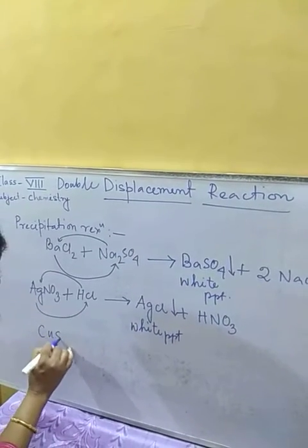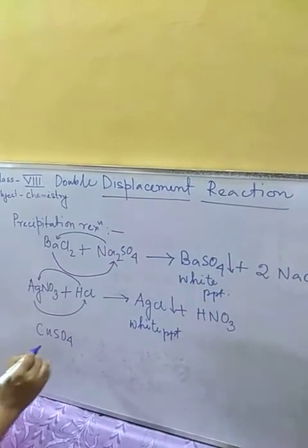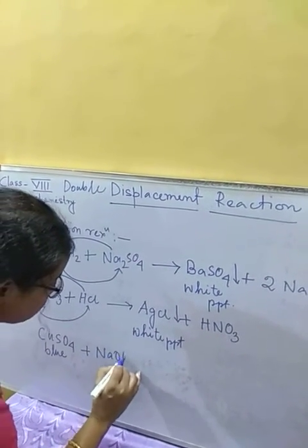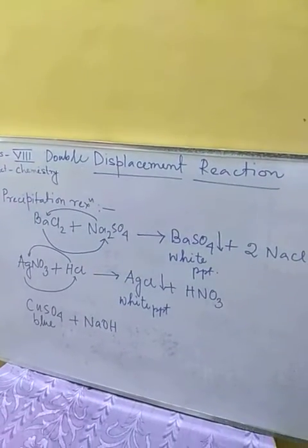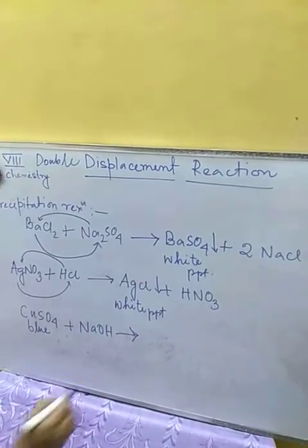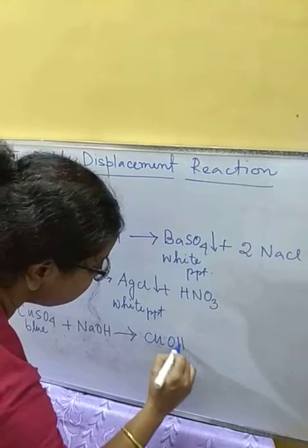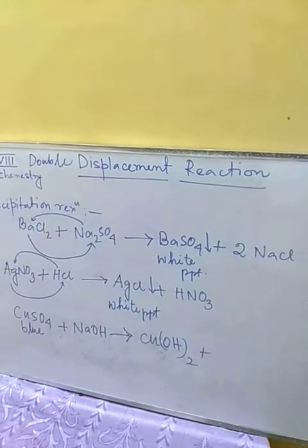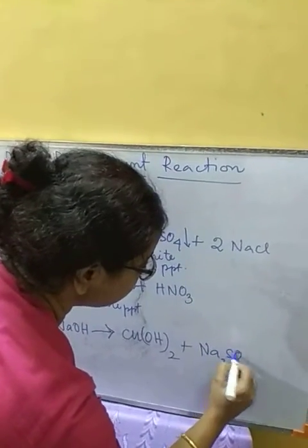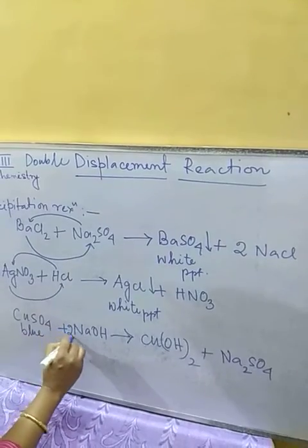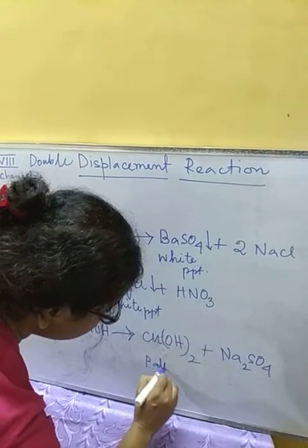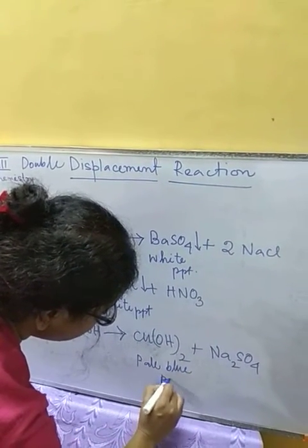Copper sulfate, which is blue in color, when reacted with sodium hydroxide (NaOH), produces a pale blue precipitation of copper hydroxide Cu(OH)₂ along with sodium sulfate. We need two moles of sodium hydroxide to balance the equation. Copper hydroxide forms a pale blue precipitate.